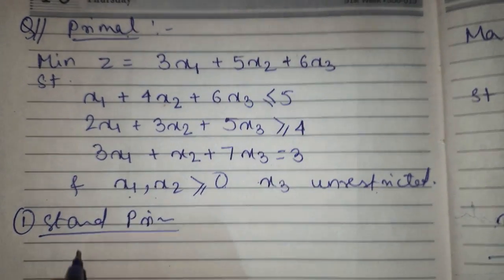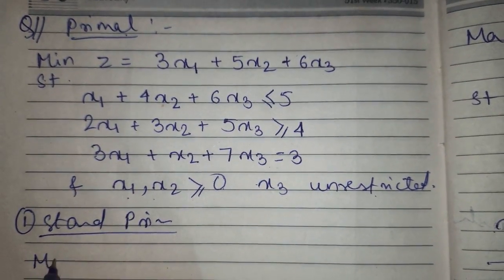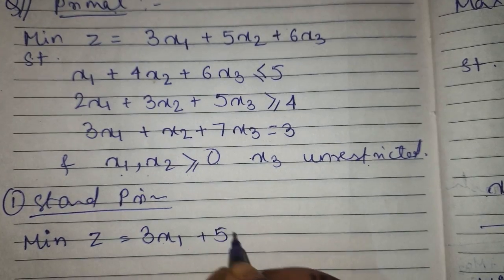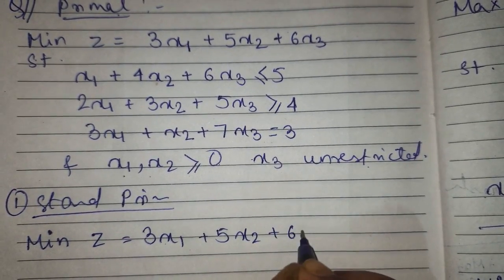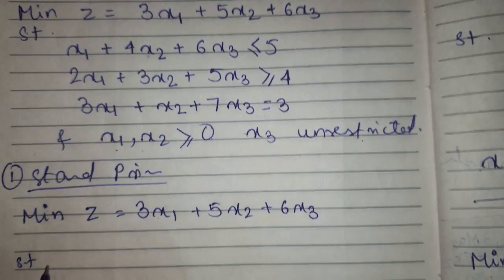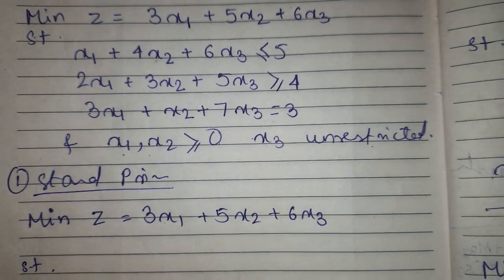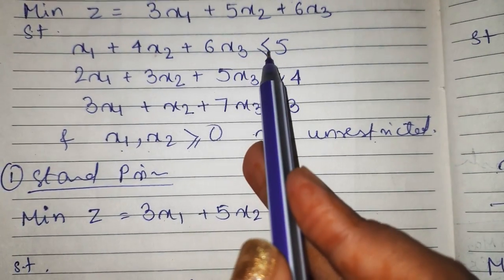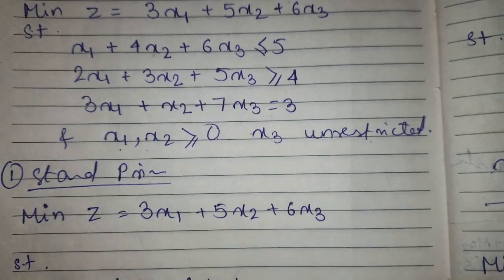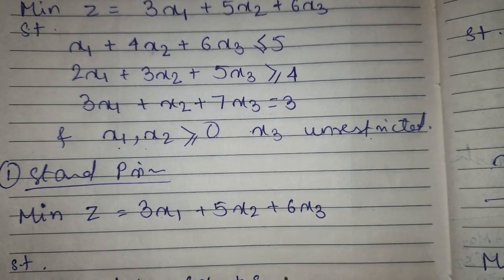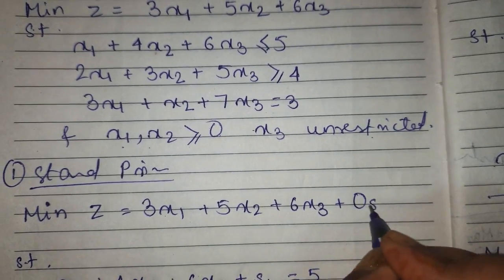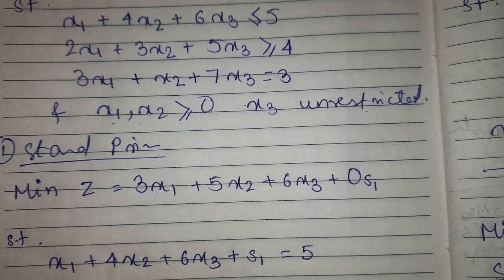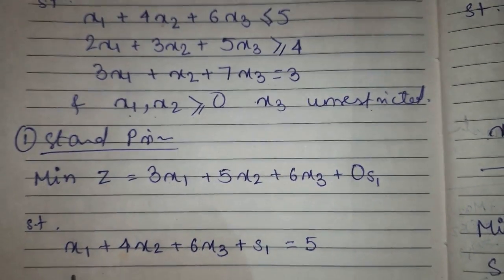Here the same minimization function will stay as minimization z equals to 3x1 plus 5x2 plus 6x3, such that the constraints x1 plus 4x2 plus 6x3 is less than or equal to, means slack variable is needed, plus s1 equals to 5.